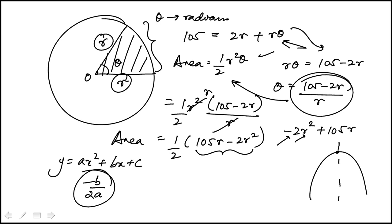So here that means r max, or I should say r that would give me the maximum area, would correspond to minus b over 2a. b is 105 over 2 times minus 2, so 105 over 4.